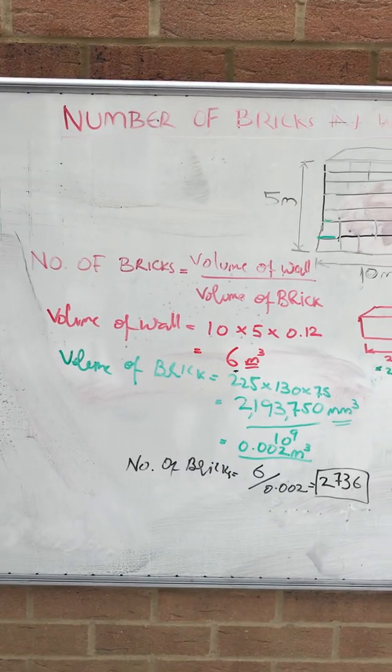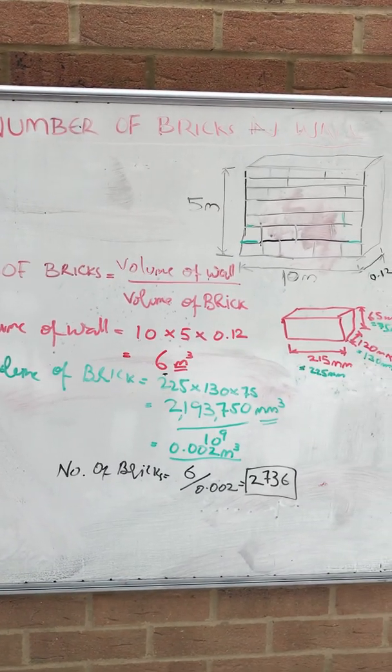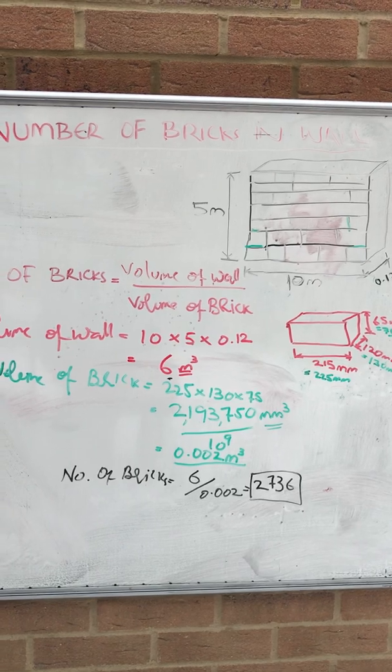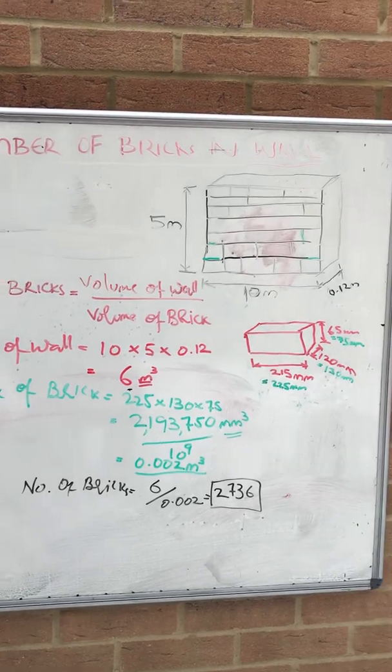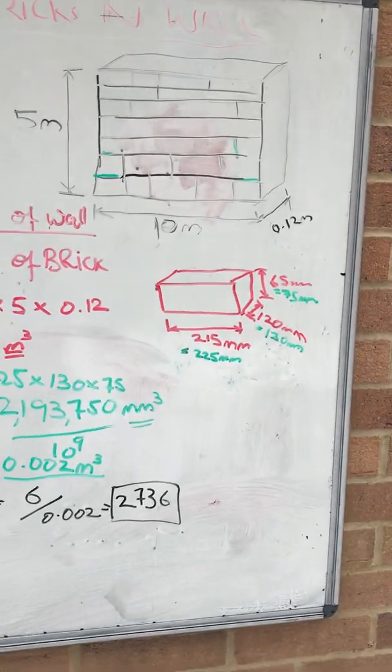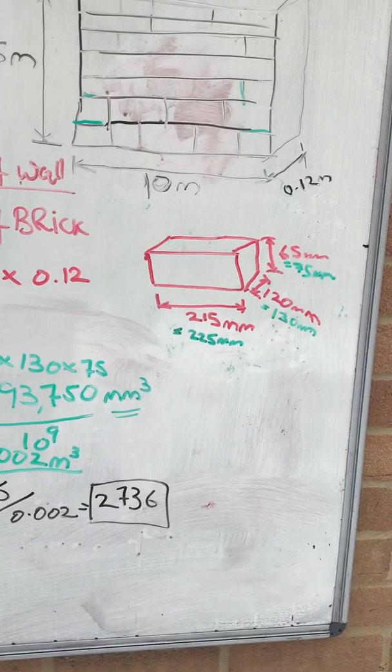So first we need to work out volume of the wall equal to 10 times 5 times 0.12, which is equal to 6 cubic meter. And then volume of the brick, here you can see the dimension there.